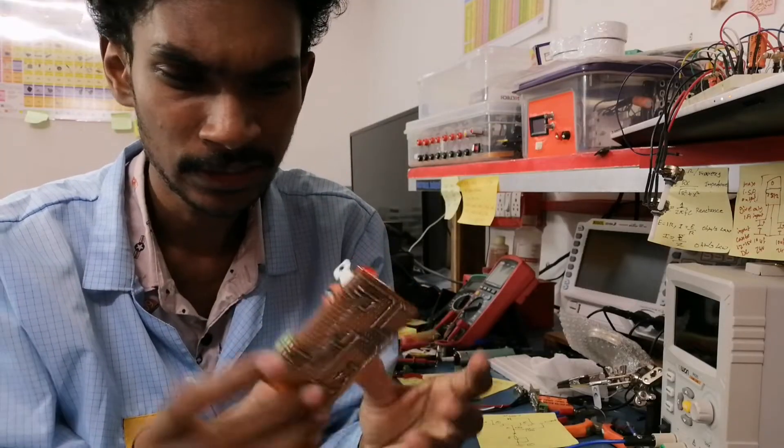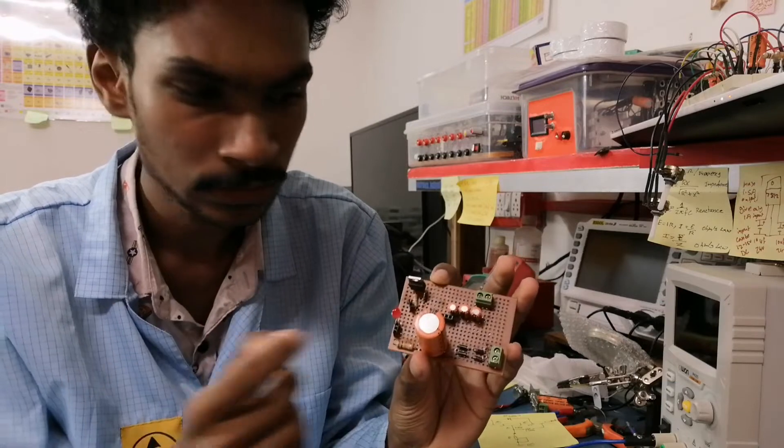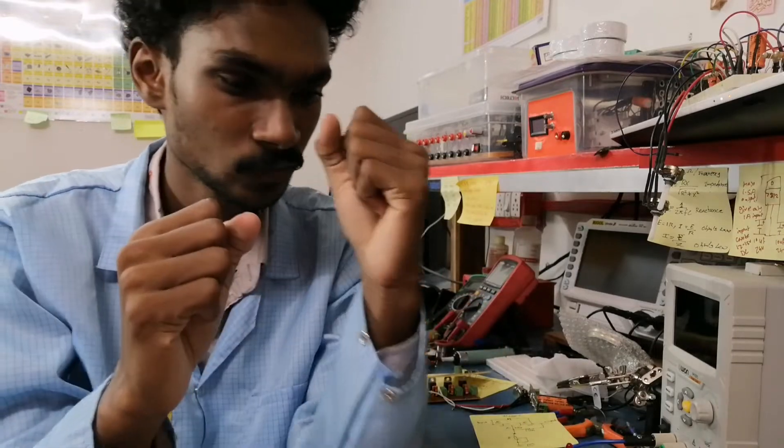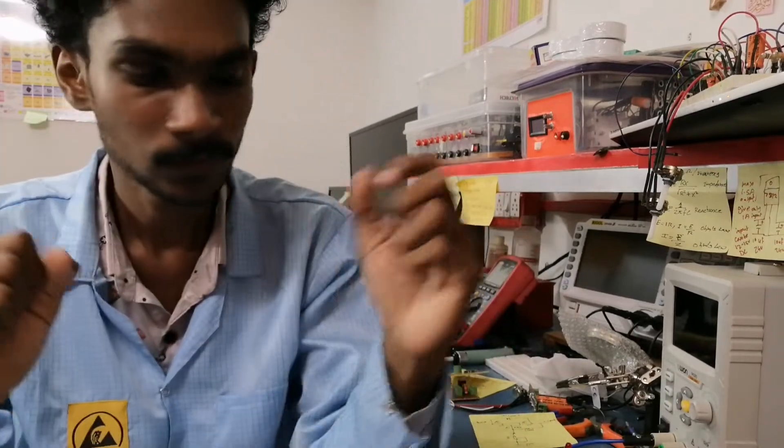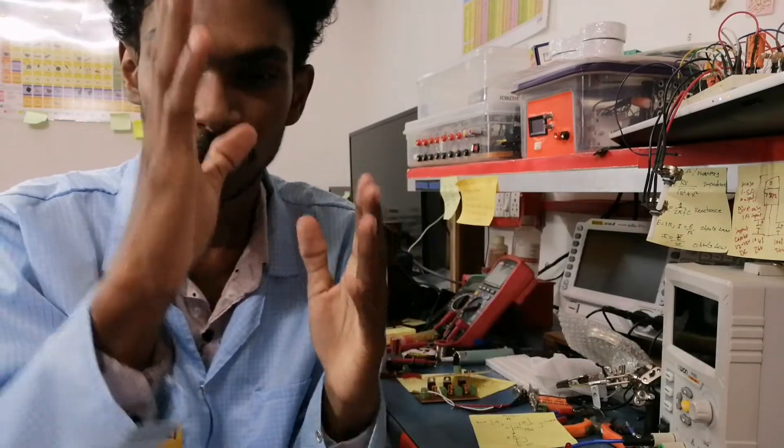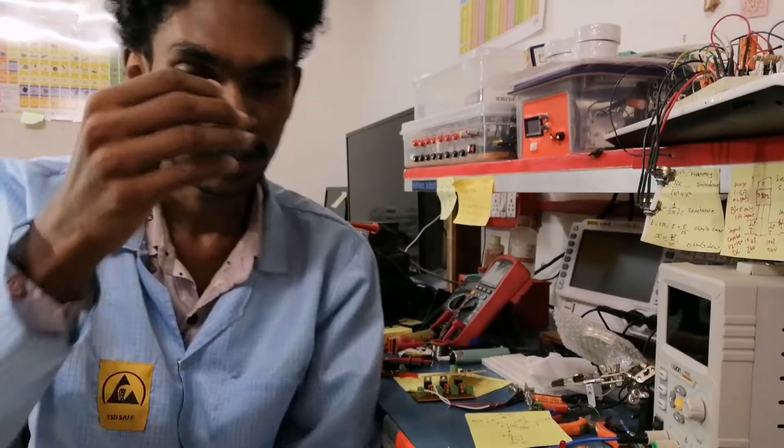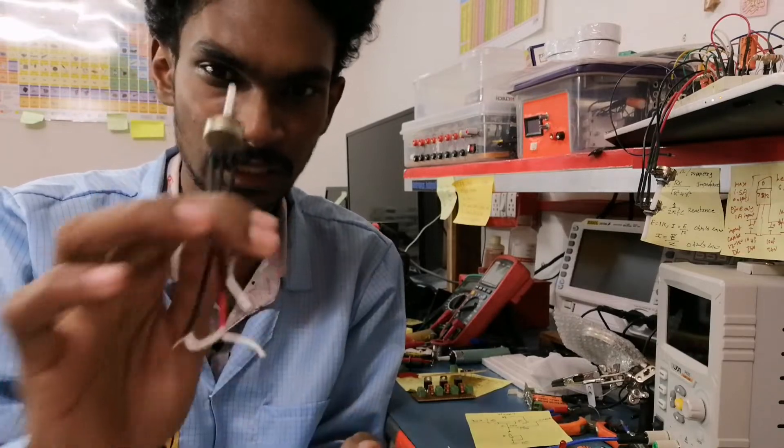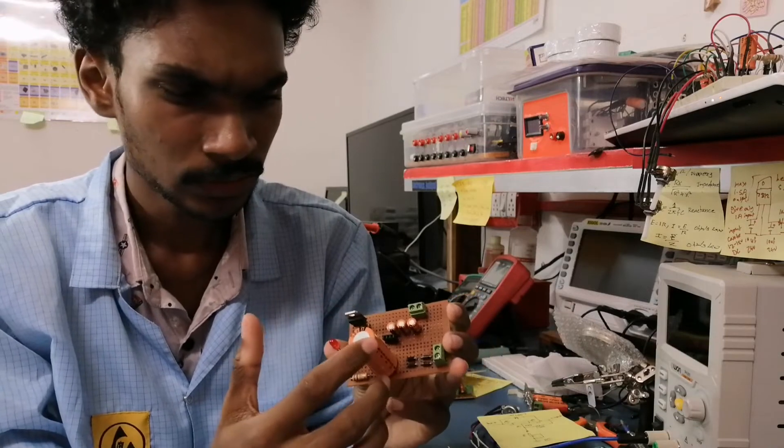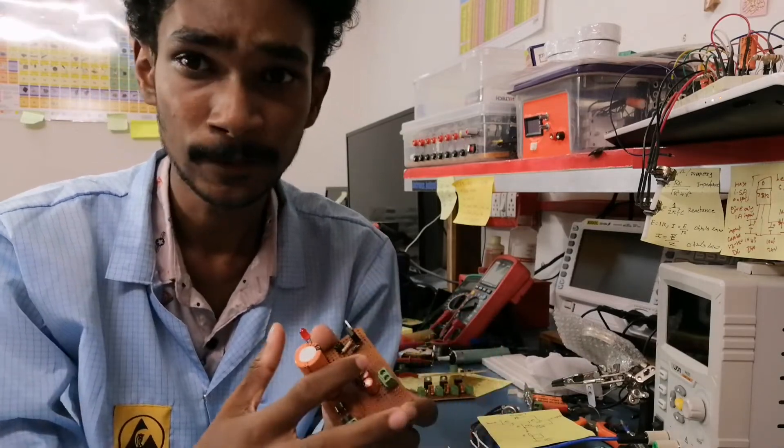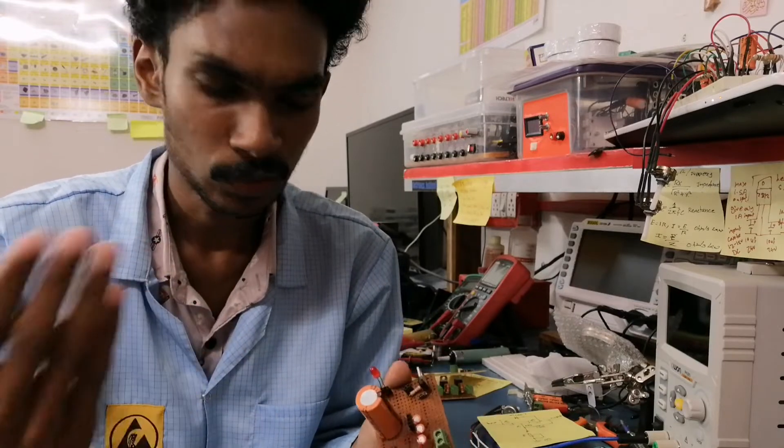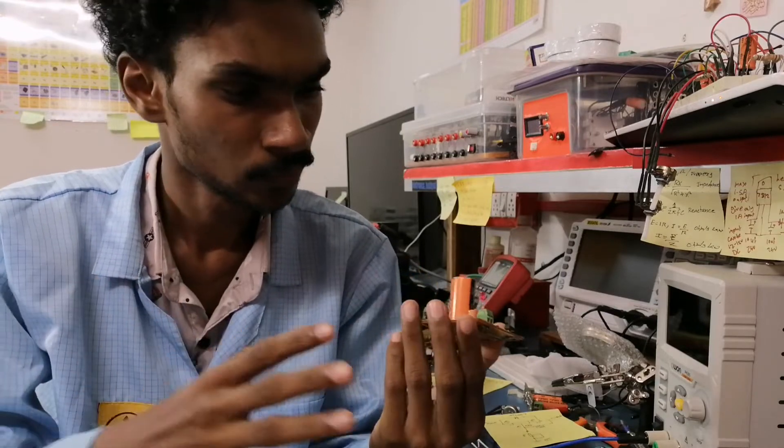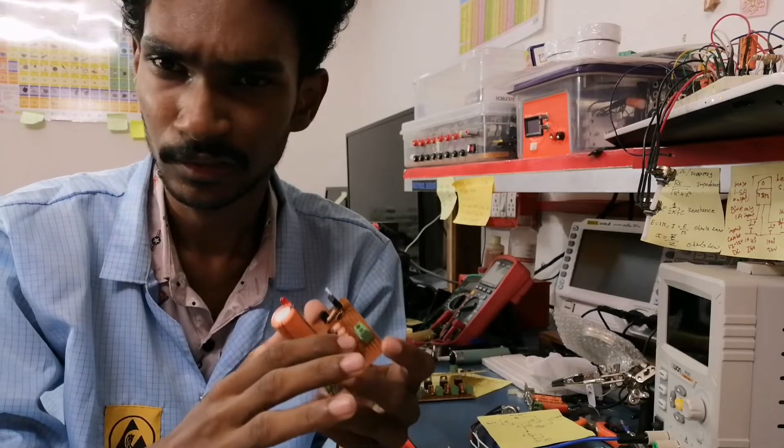So guys, we are going to use the LM317. First pin, second pin and third pin. Third pin is the input and second pin is the output. First pin is the voltage regulator. We are going to use the voltage variable. This is the input filter and the output filter.